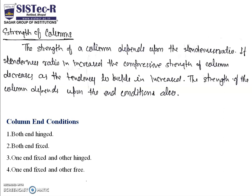The strength of a column depends on the slenderness ratio. If the slenderness ratio is increased, the compressive strength of the column decreases, as the tendency to buckle increases. The strength of the column also depends upon the end condition. The four end conditions are: both ends hinged, both ends fixed, one end fixed and the other hinged, and one end fixed and the other free.